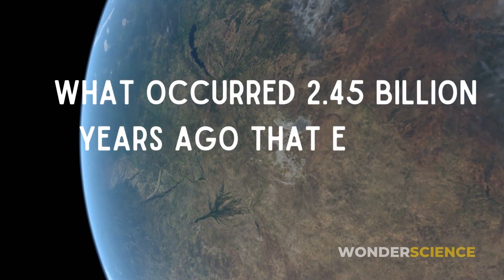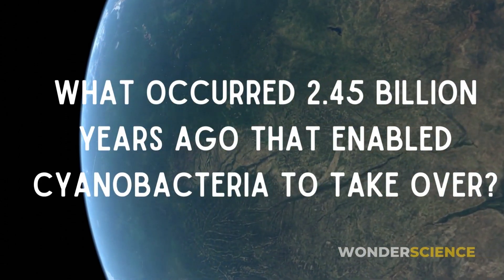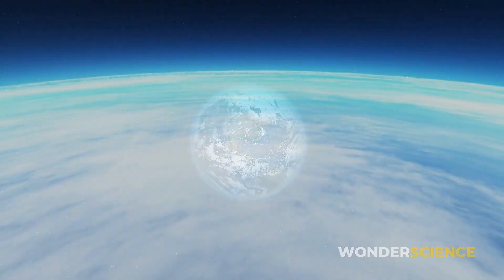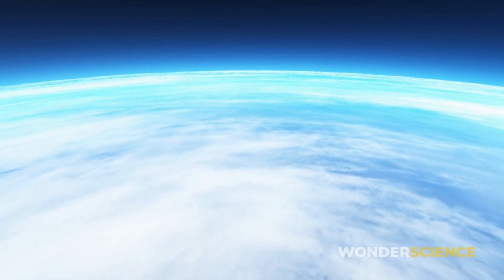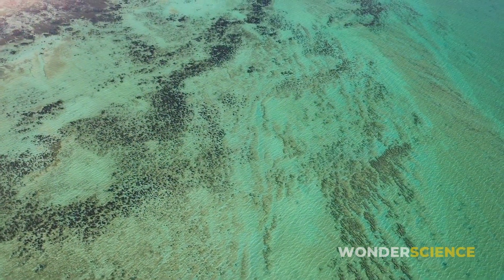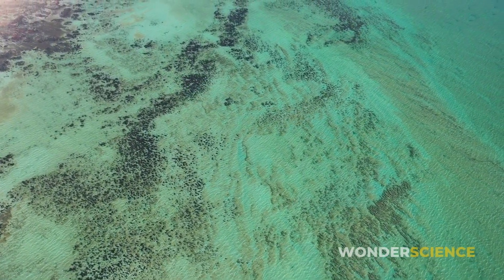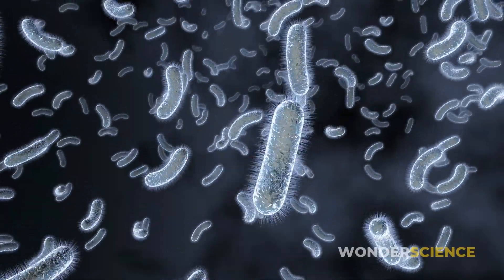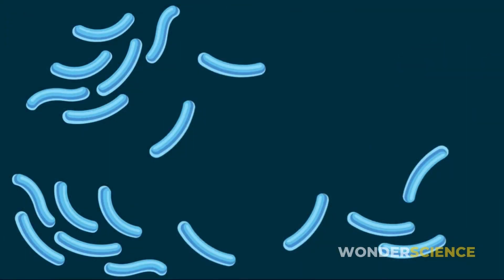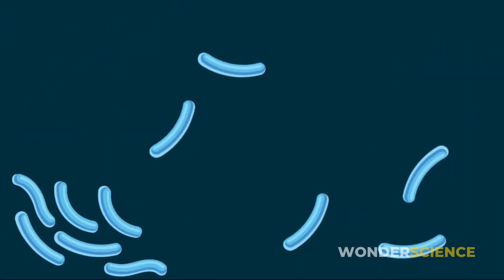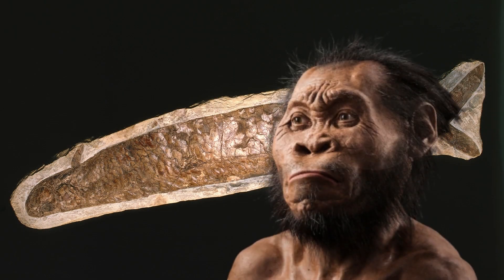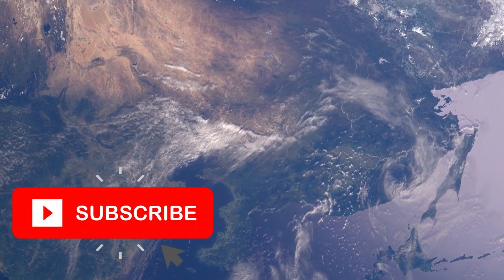So what occurred 2.45 billion years ago that enabled cyanobacteria to take over? Back then, our atmosphere didn't have as much oxygen as it does today. The little oxygen that our planet did have was either bonded with minerals or locked up within water molecules. As cyanobacteria flourished, the supply of oxygen on the planet increased exponentially. The vast majority of anaerobic bacteria, for whom oxygen was toxic, began to die due to this rush of oxygen in the atmosphere. It was then that other more complex forms of life, including animals and humans, started evolving, thereby making oxygen the fuel source.